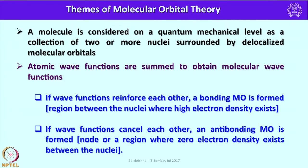A molecule is considered on a quantum mechanical level as a collection of two or more nuclei surrounded by delocalized molecular orbitals generated as a consequence of mixing of atomic orbitals. Atomic wave functions are summed to obtain molecular wave functions. If wave functions reinforce each other, a high electron density region exists between the two nuclei — that is called a bonding molecular orbital. If wave functions cancel each other, an antibonding molecular orbital is generated where a node, or region of zero electron density, exists between the nuclei.